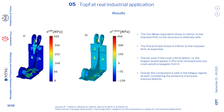Here, the stress analysis as provided by the algorithm is reported. As it can be noticed, the von Mises equivalent stress is inferior to the implicit limit — that is, the yield stress — so the structure is statically safe. The first principal maximum stress is inferior to the implicit limit by the Murakami model, as expected. Overall, even if the most critical defect — that is, the largest — would appear in the most stressed area, no crack would propagate from it. In conclusion, the component is safe in the fatigue regime as well, considering the presence of process-induced defects.